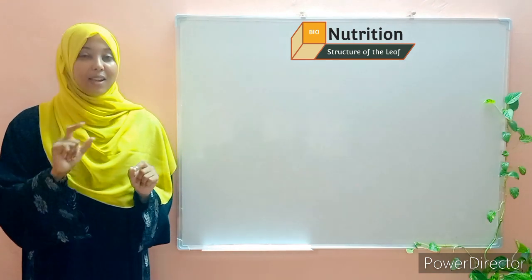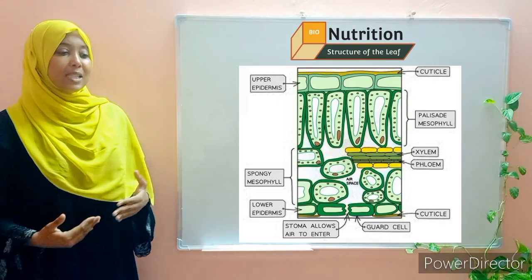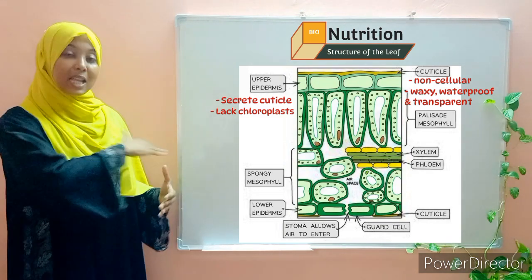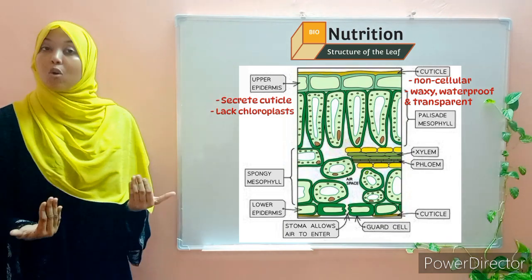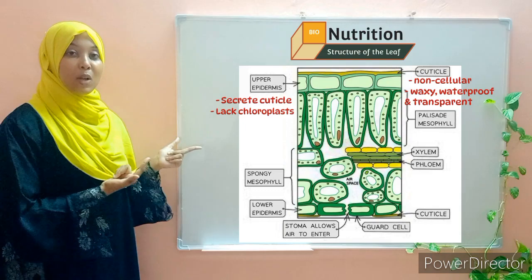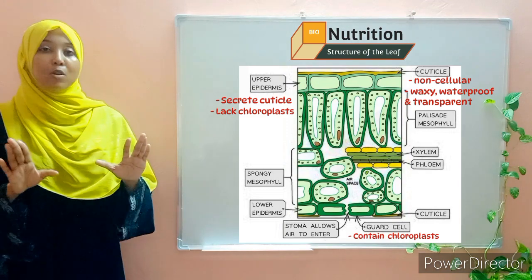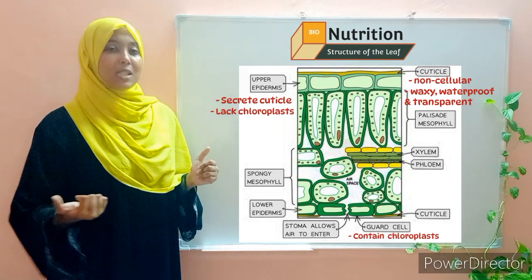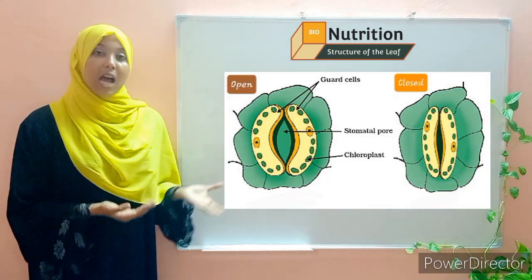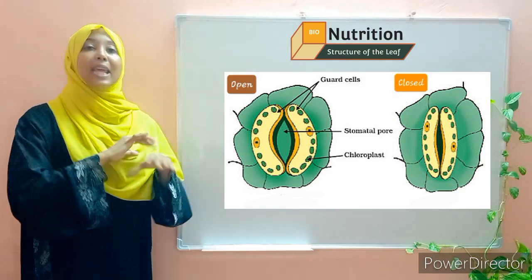One important thing to add: although epidermal cells lack chloroplasts, not all of them do. There is a specialized type called guard cells found in the epidermal layer that does have chloroplasts and can therefore photosynthesize. Guard cells are bean-shaped and usually occur in pairs.